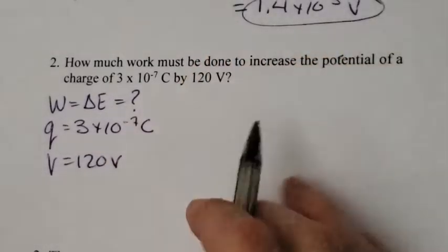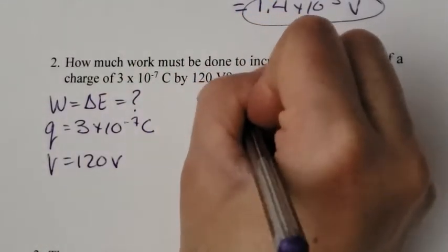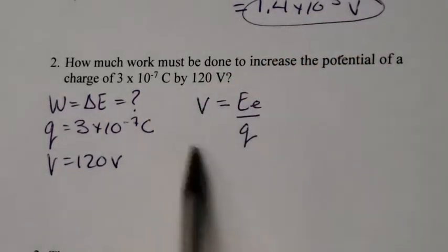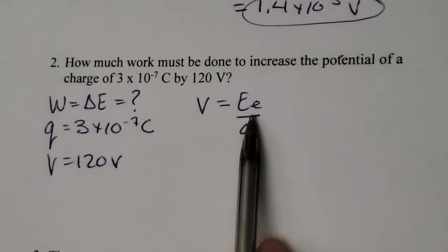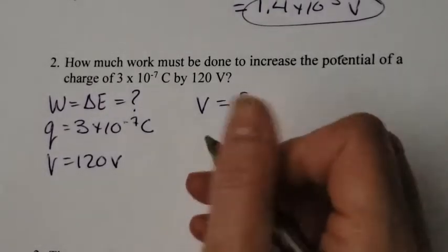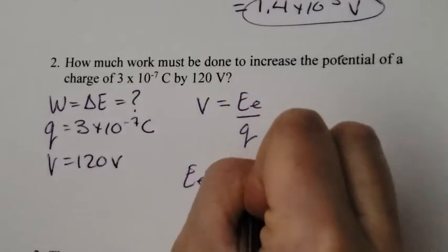My other formula for voltage is V is equal to the energy per unit charge. And all I need to do is rearrange this for energy. So to do that, I multiply both sides by Q and I end up with EE is equal to VQ.